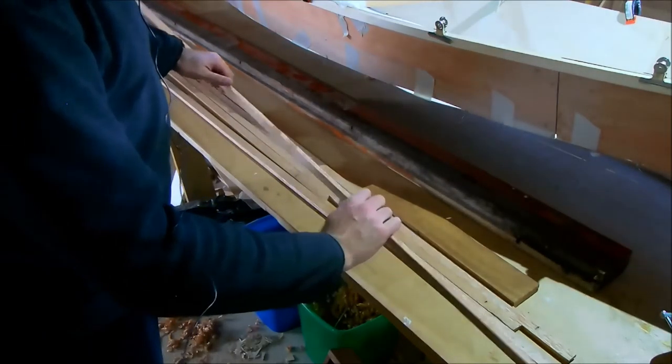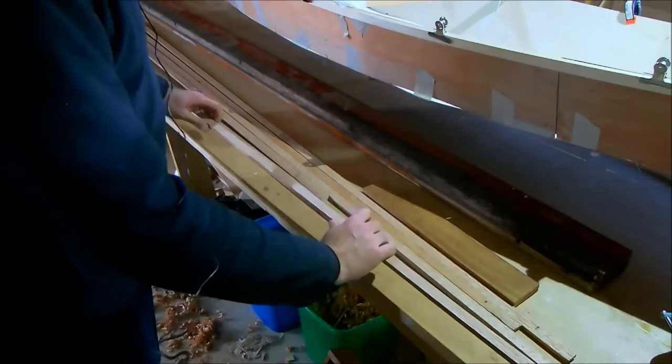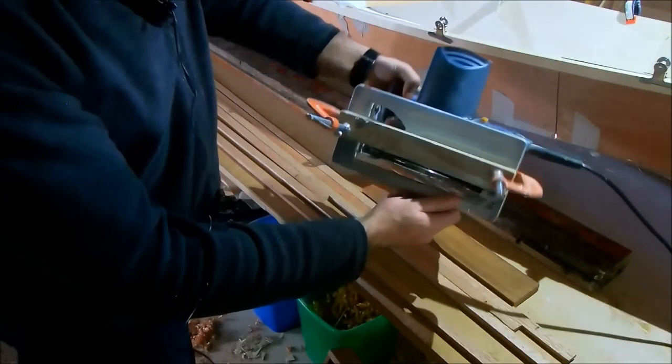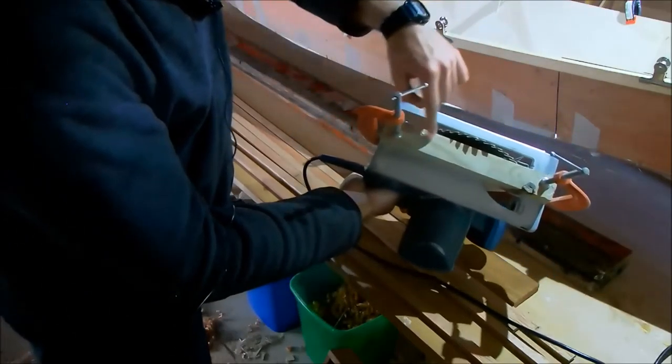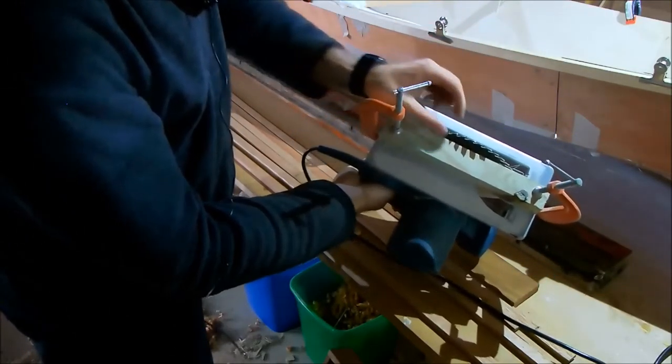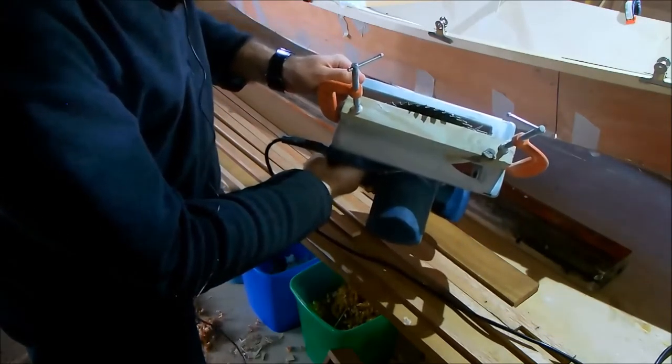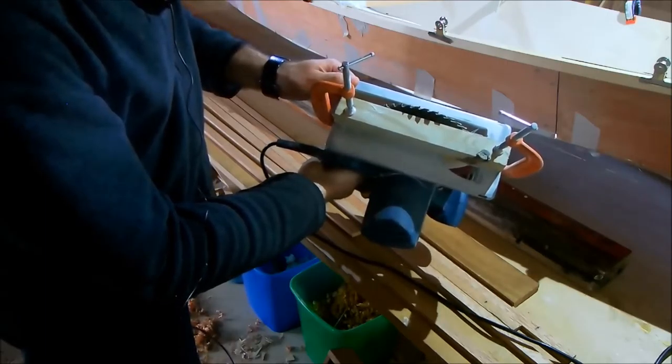These are the strips already ripped. I don't have a table saw, but this setup with the normal circular saw works quite well. Just a fence clamped on, and I can adjust that width over there to give me any thickness down to about three millimeters, and it cuts very consistently.